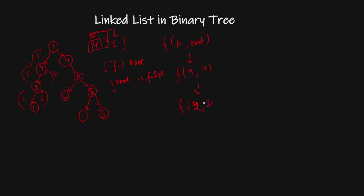Now the current node is 2 and the next node in the linked list is also 2 — they match. From this node's left, it gets false. So it goes to the right child, which is also 2, and the head's next value is also 2. It then goes to that node's left child, which is 6, and head is also 6.